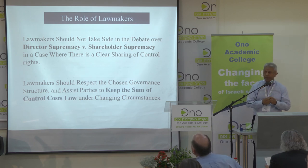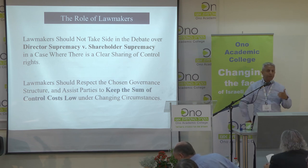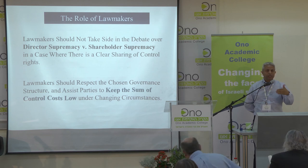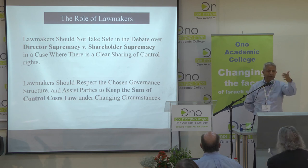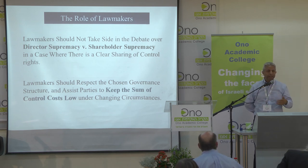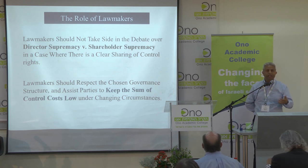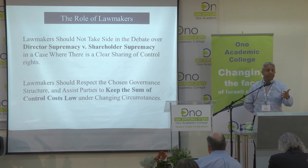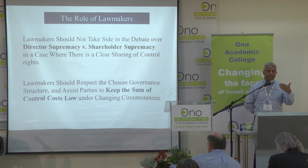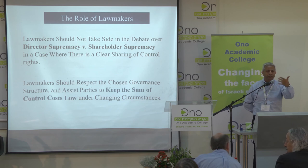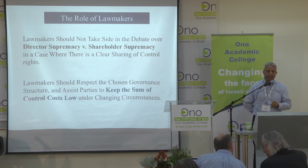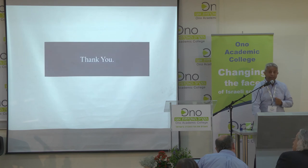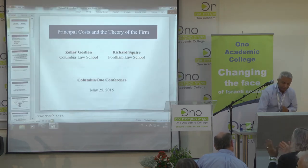A few illustrations: when you have a takeover that takes two days to complete — what they call a Saturday night special, where you make the tender offer on Saturday night and want approval by Monday — that's exploiting shareholders, increasing principal cost with no countering benefit. So the Williams Act requiring 20 business days is appropriate. When you have a coercive dual class offer, the Unocal rule is appropriate because it reduces principal costs that have no countering benefit on the other side. Thank you very much.